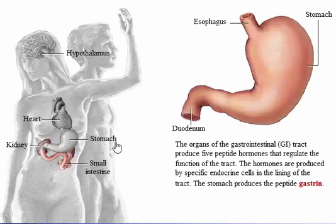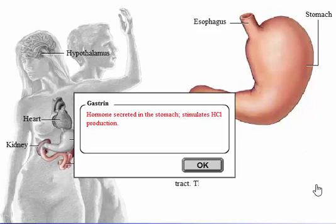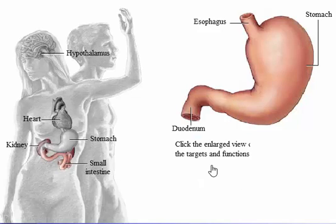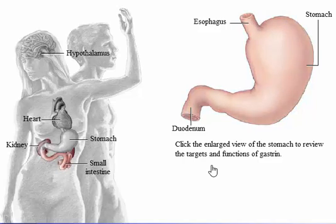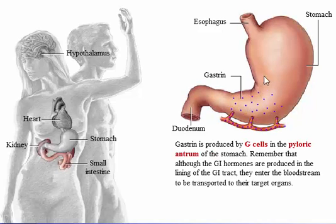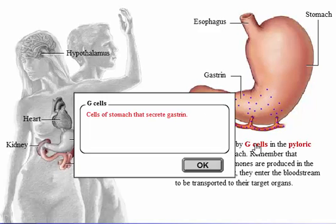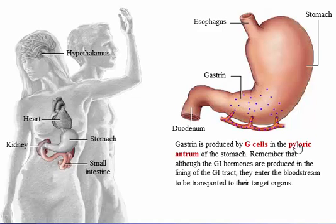The organs of the gastrointestinal tract produce five peptide hormones that regulate the function of the tract. The hormones are produced by specific endocrine cells interspersed in the lining of the tract. The stomach produces the peptide gastrin, which is produced by G cells in the antrum of the stomach.